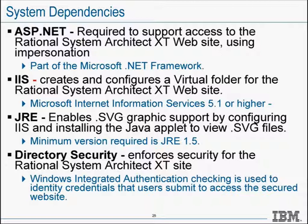You also need IIS — Microsoft Internet Information Services — which allows the creation and configuration of a virtual folder, the published website that SAXT provides to the SAXT client. You also need the JRE Java Runtime Environment, which enables SVG graphic support for the published website. Additionally, directory security is required to enforce security for the SAXT site through Windows Integrated Authentication, checking the identity credentials that users submit to access the secure website.